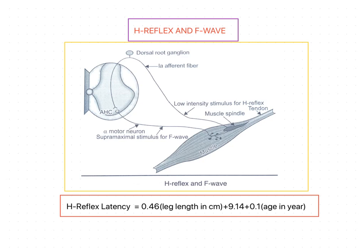When a sub-maximal stimulus—a low intensity stimulus—is applied to the peripheral nerve, the action potential travels along the 1a afferent fiber. These are sensory neurons that synapse with alpha motor neurons in the anterior horn cells. The subsequent activation of the peripheral motor nerves causes contraction of the muscle.